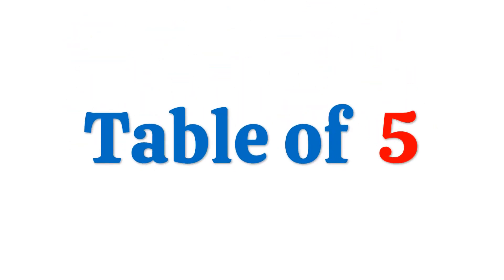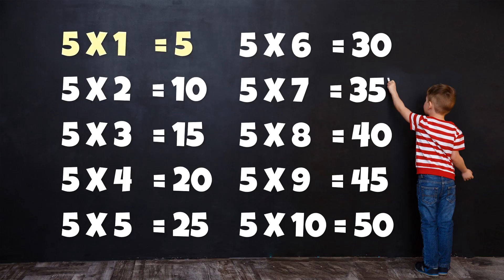Table of 5: 5 times 1 is 5, 5 times 2 is 10, 5 times 3 is 15, 5 times 4 is 20, 5 times 5 is 25, 5 times 6 is 30, 5 times 7 is 35, 5 times 8 is 40, 5 times 9 is 45, 5 times 10 is 50.